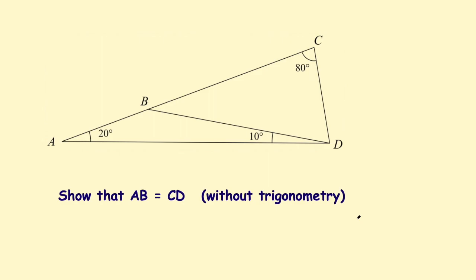Here is a nice geometric puzzle for you. You are given this shape and you're asked to show that AB equals CD without trigonometry. So here's the line AB and here's the line CD. You need to show that they are equal in length.